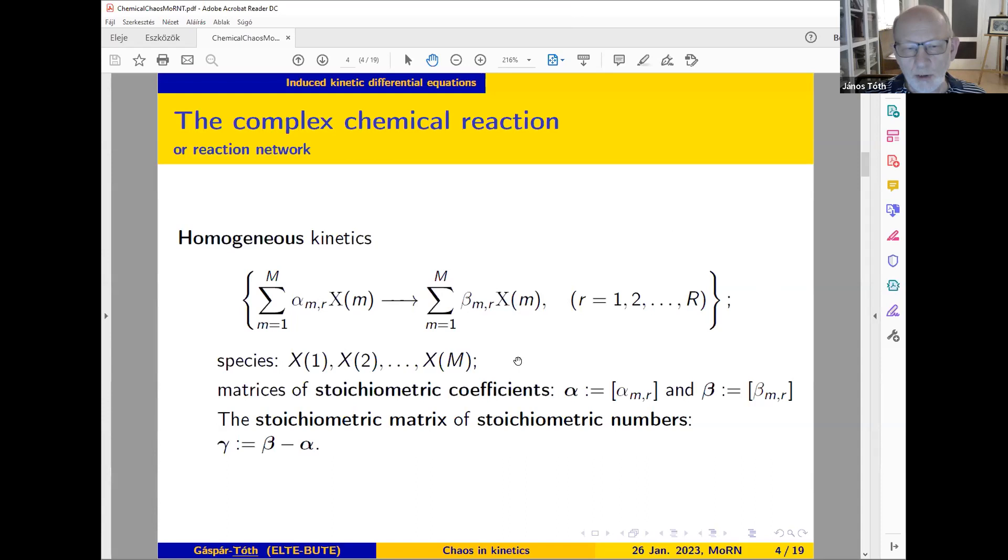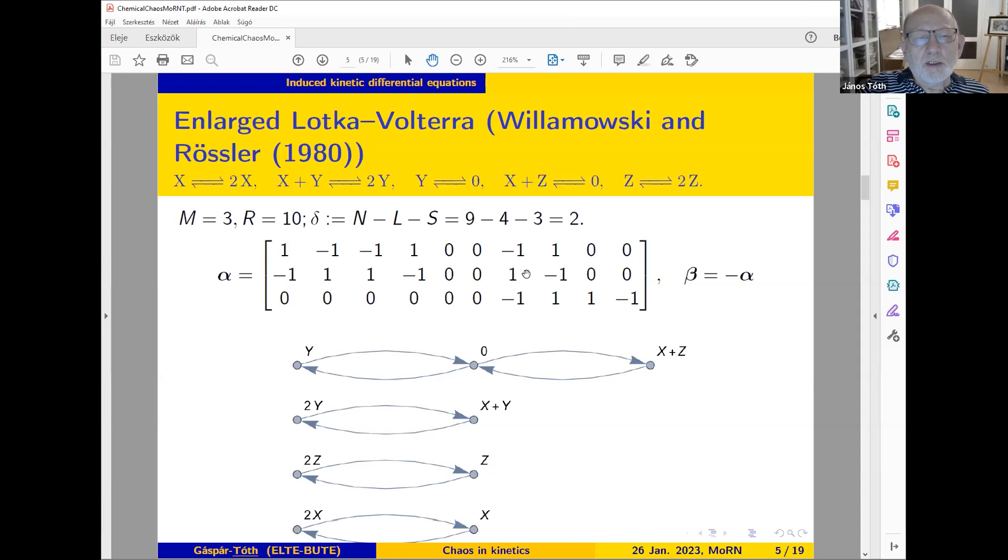Here X1, X2, Xm are the species, and the coefficients before the sign of the species are stoichiometric coefficients. These are put into two matrices, alpha and beta, and the difference of beta and alpha is the stoichiometric matrix. Let's see an example: an enlarged Lotka-Volterra system introduced by Willamowski and Rössler.